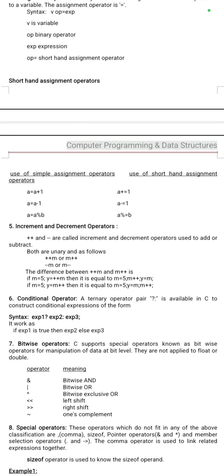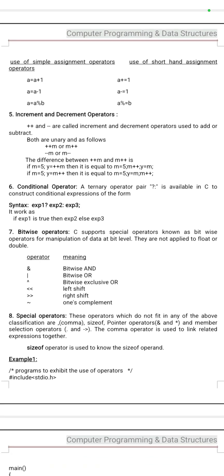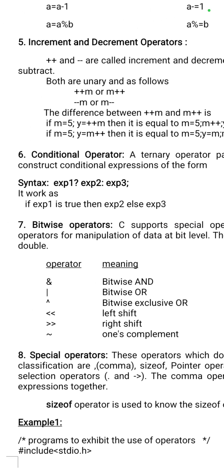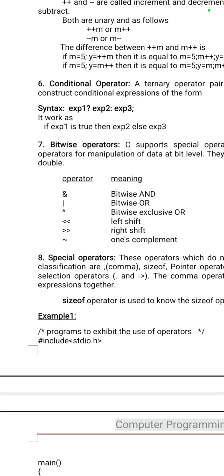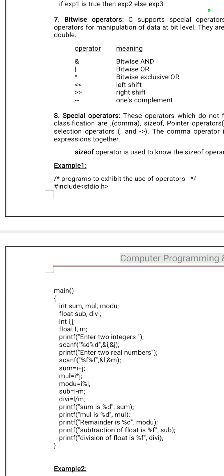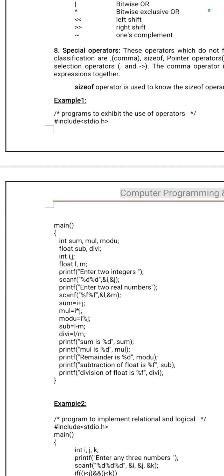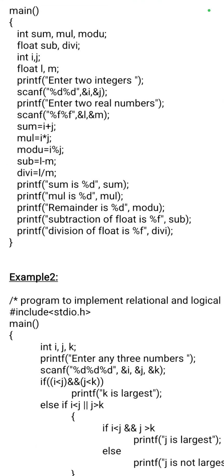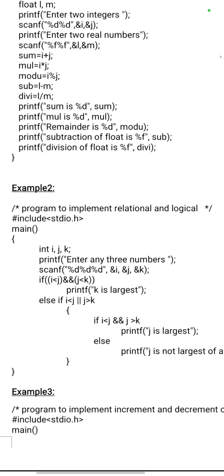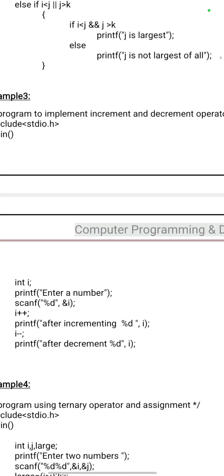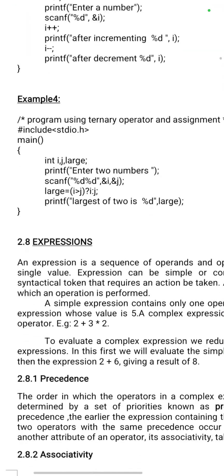Increment and decrement operators: plus-plus and minus-minus — pre-increment, post-increment, pre-decrement, post-decrement operators. The conditional operator is a very special operator using question mark and colon. Special operator: sizeof. Examples for arithmetic operators, relational operators, logical operators, and increment/decrement operators are also explained here.